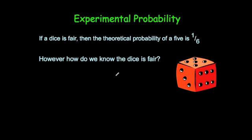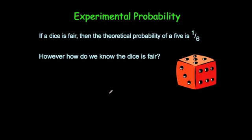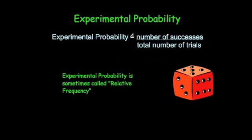However, how do you know a dice is fair? So the only way to find out really is to do an experiment, to roll it and then to work out what the experimental probability is. So the experimental probability is equal to the number of successes over the number of trials.